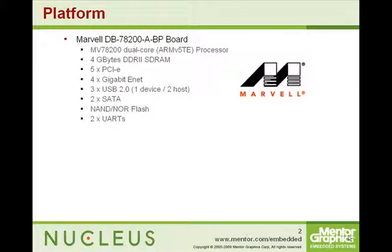We've put this demonstration together on the Marvell DB78200 board. This board has an MV78200 dual-core processor. It's a homogeneous processor with two ARM V5TE cores. It has a large amount of SDRAM as well as a multitude of peripherals. For this demonstration, we're only using PCIe and the UARTs — PCIe for the graphics display and the UARTs for input.